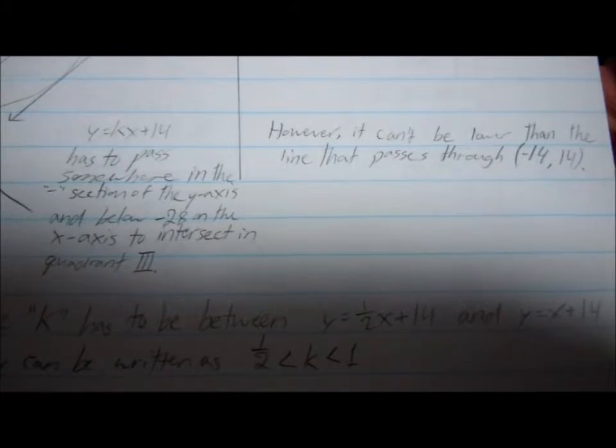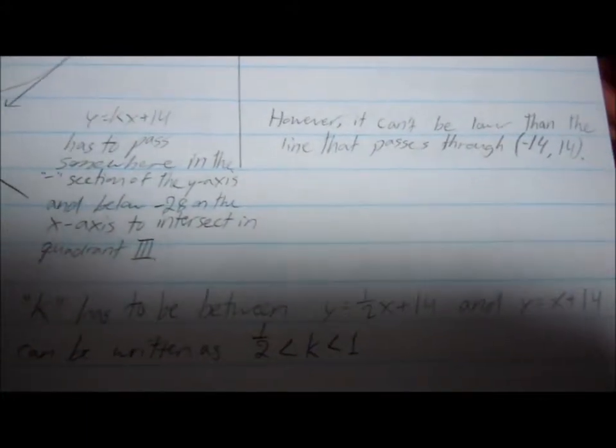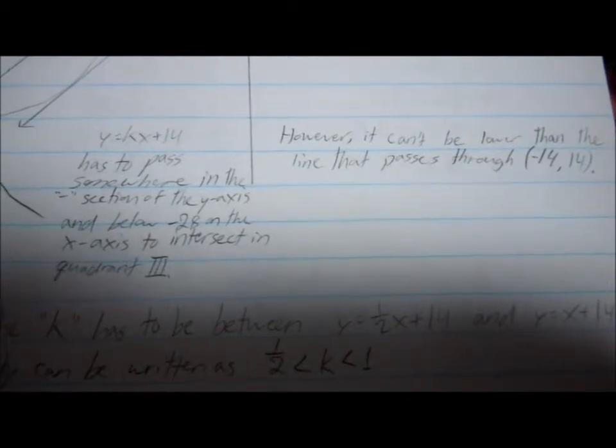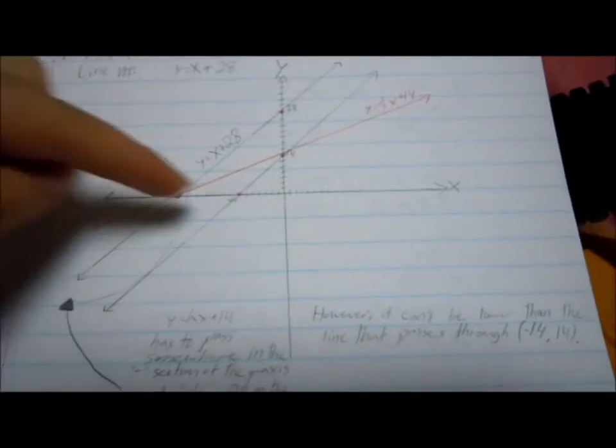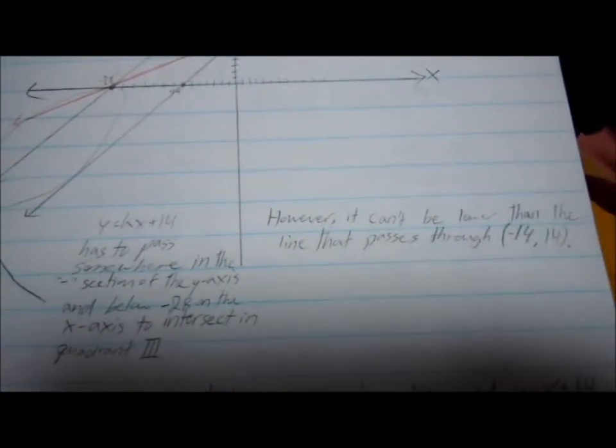So the value of k has to pass through somewhere in the negative section of the y-axis and below negative 28 in the x-axis to intersect in quadrant number 3. So here and right here to intersect here. But it cannot be lower than the line that passes through negative 14 and 14.